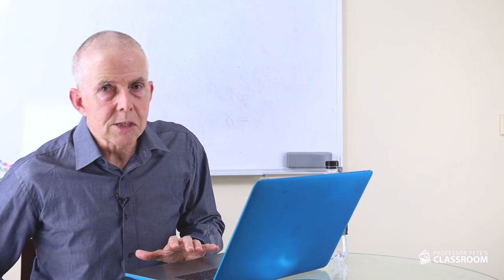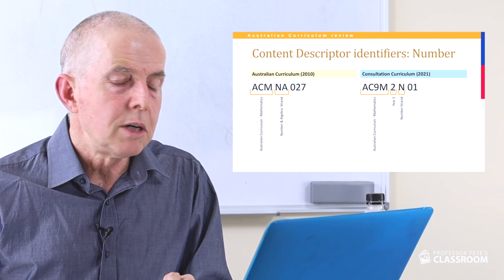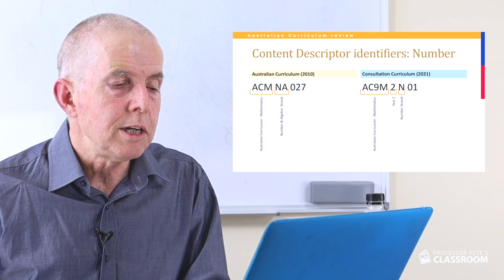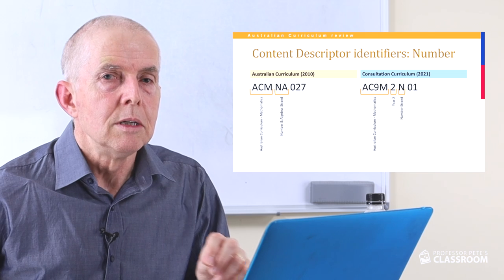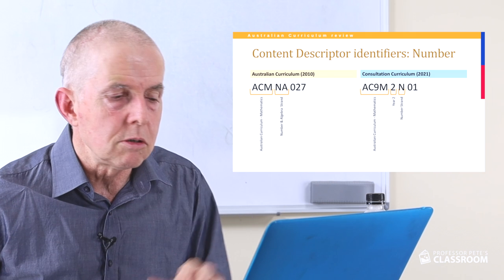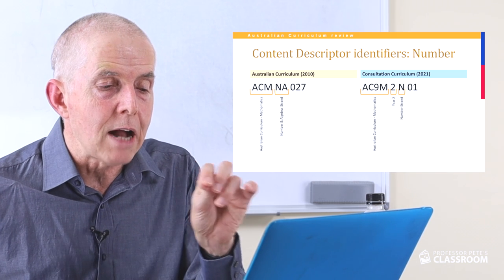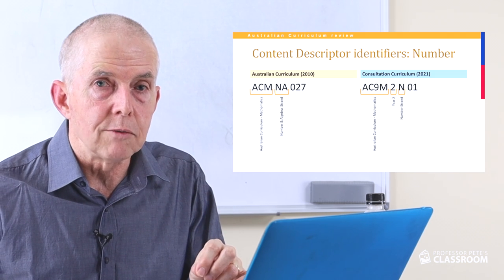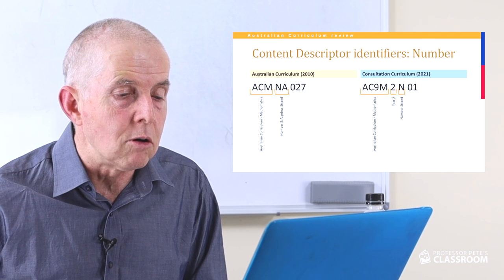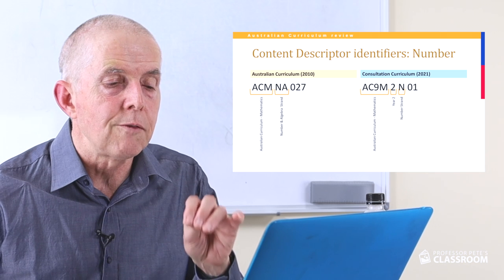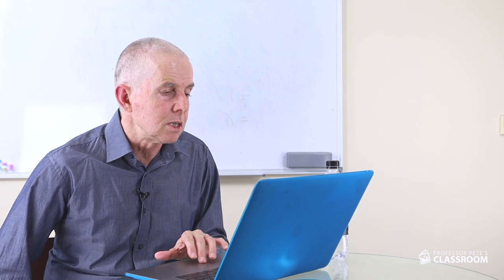In the old curriculum, content descriptors started with ACM — Australian Curriculum Mathematics — then a strand designation like NA for Number and Algebra, followed by a three-digit number. Those numbers increment through the curriculum strands and year levels. In the new curriculum, after the M, the next digit tells us the year level, so a two indicates year two. Number has been separated from algebra, so it's just N, and 01 refers to the first content descriptor for number. The numbering system is much improved.